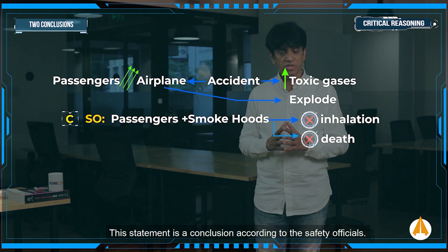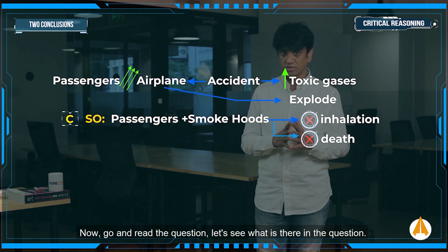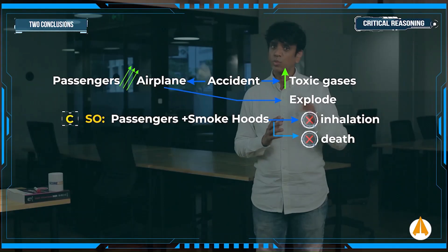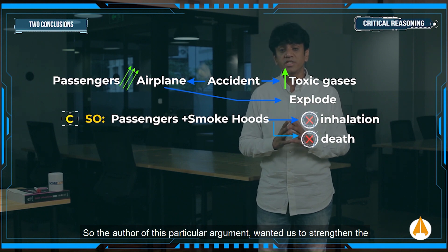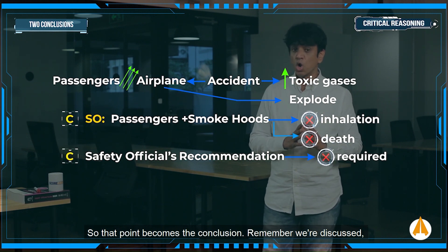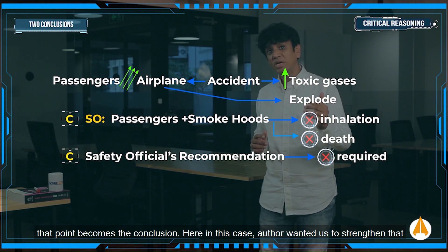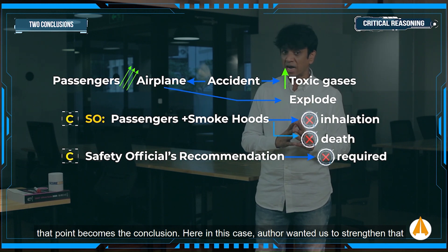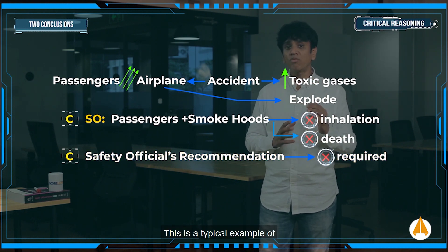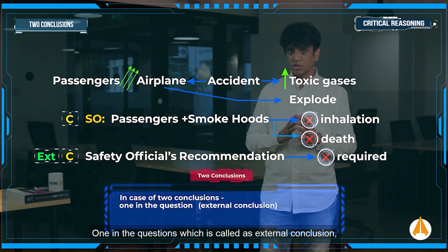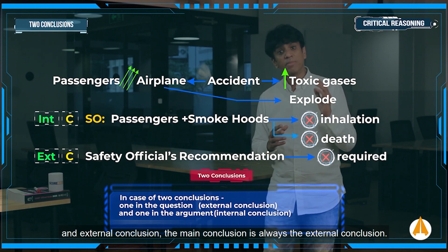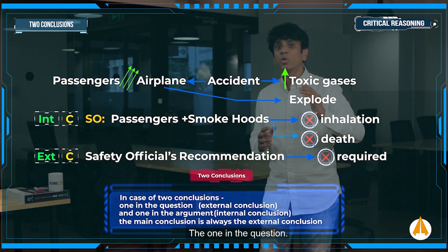The question asks: 'Which of the following, if true, constitutes the strongest reason not to require the implementation of the safety official's recommendation?' So the author wanted us to strengthen the point that the safety official's recommendation is not required to implement — that point becomes the conclusion. This is a typical example of two conclusions: one is called the internal conclusion, found inside the argument, and one is the external conclusion, found in the question. Whenever there are two conclusions, the main conclusion is always the external conclusion — the one in the question.